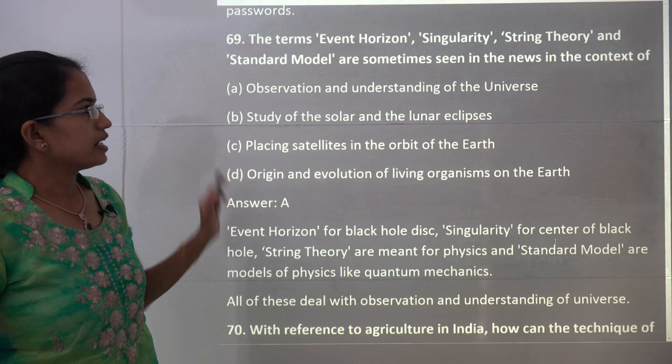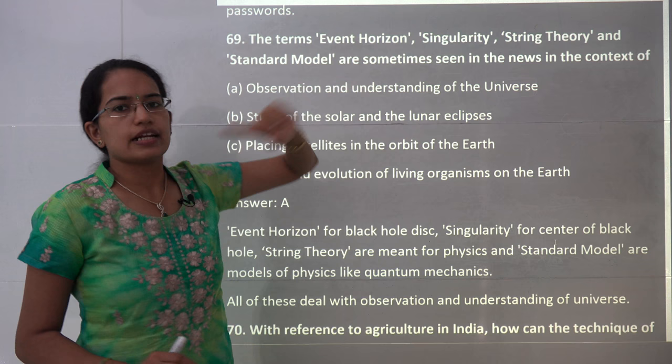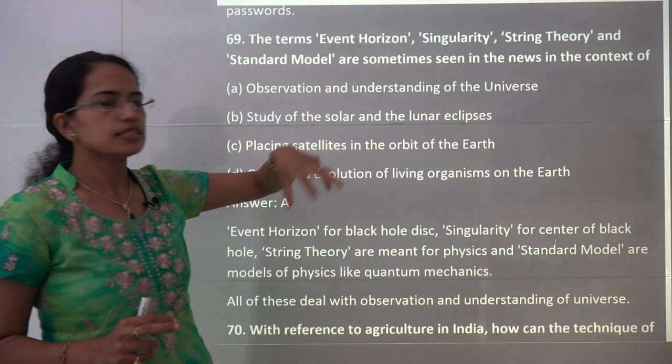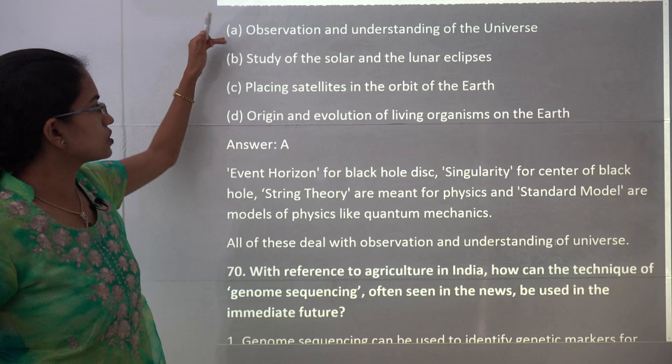The next question involves terms used to understand the universe. Event horizon and singularity are related to black holes — event horizon is the disc formation and singularity is the center of the black hole. String theory and the standard model in physics are related to quantum mechanics. All of these are useful for understanding the universe, so A is the correct answer.